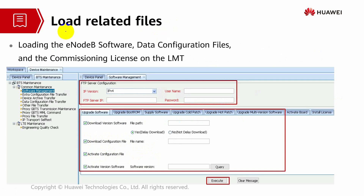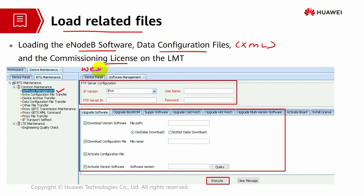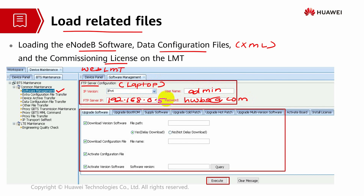Load the related files. Usually, the standard information that we will be loading is eNodeB software, data configuration file which is in XML format, and also commissioning license. This will be under the software management in your WebLMT. You will notice that we have to configure the FTP server. This configuration is based on the settings from your laptop — the username 'admin', password. The server IP will be your laptop or PC IP.